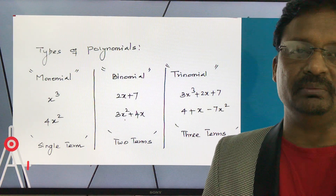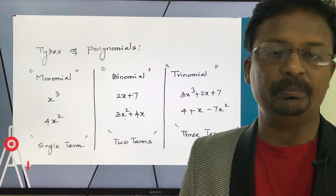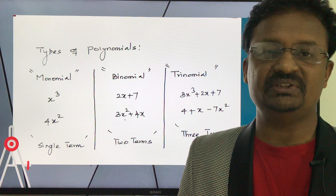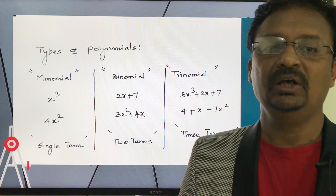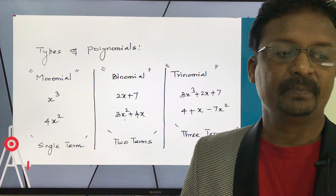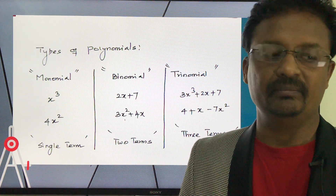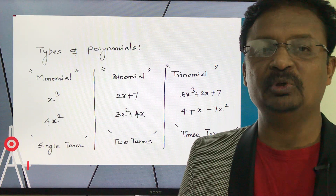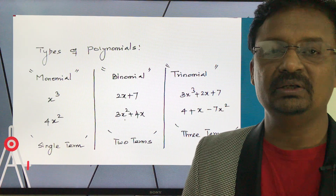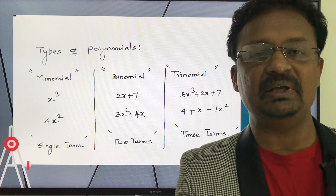3x² + 4x is also a binomial. A trinomial contains three terms. For example, 3x³ + 2x + 7 has three terms, so it is a trinomial. Another example: 4 + x - 7x² also has three terms and is a trinomial. A polynomial with more than three terms is simply called a polynomial.